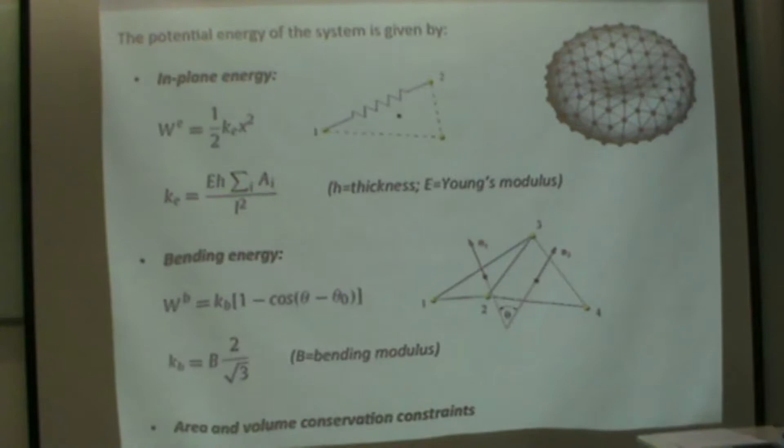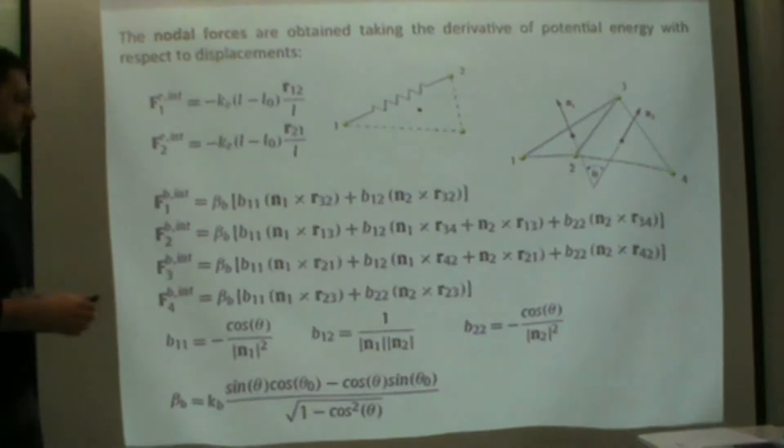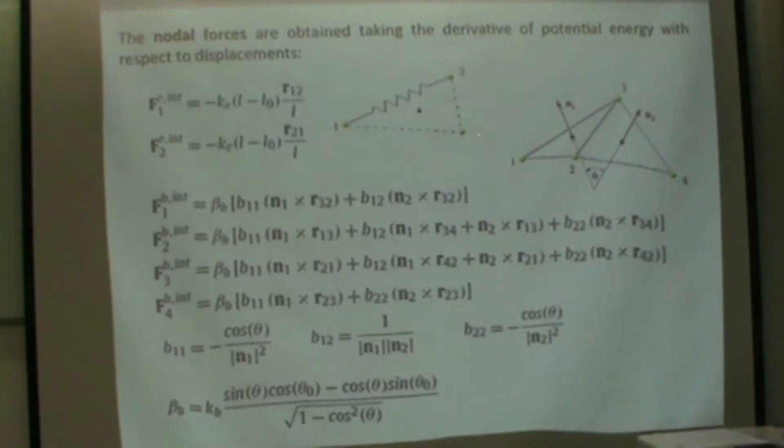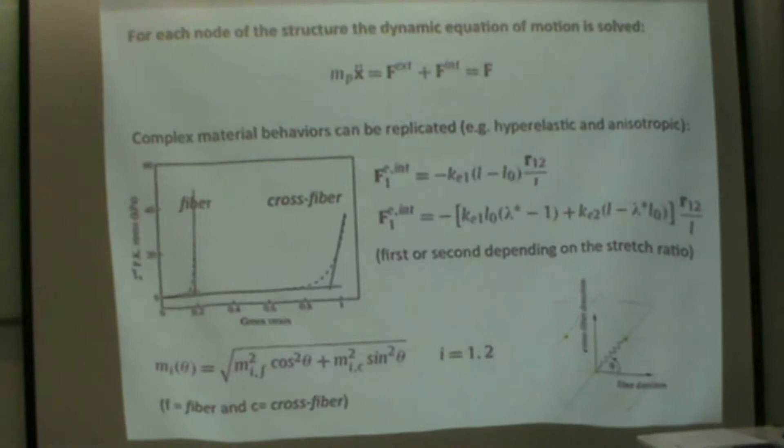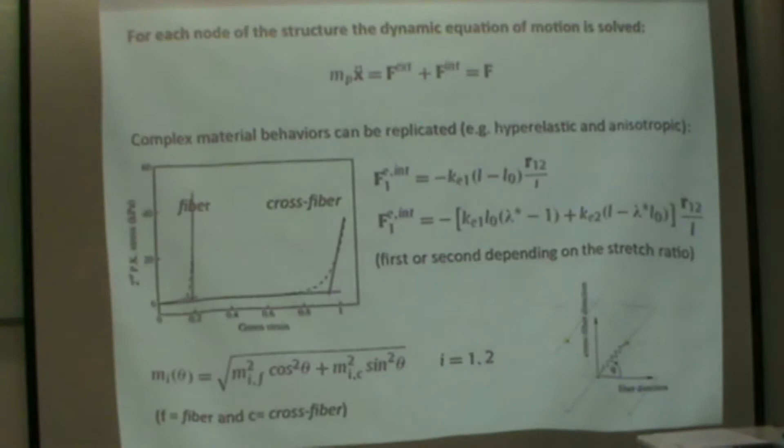Given the flexibility of this simple model, we can have different constraints like area and volume conservation constraints to model incompressible or inextensible cells like red blood cell surfaces. Taking the gradient of these potentials, we evaluate the internal forces on the nodes. We have elastic forces and bending forces on each node. For each node of the structure, we solve the dynamic equation using both hydrodynamic and internal forces. Here's an example of a complex material we're modeling, like the bioprosthetic aortic valve, where we can model hyperelastic and anisotropic behavior approximately, with very good results.